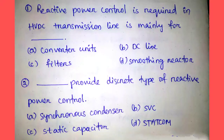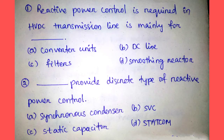Question number one: Reactive power control is required in HVDC transmission line mainly for — Option A: converter units, Option B: DC line, Option C: filters, Option D: smoothing reactor. The reactive power control is required in HVDC transmission line mainly for converter units.